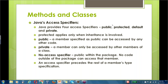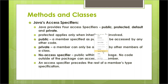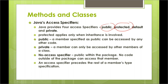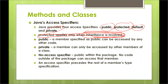Java provides four access specifiers: public, protected, default, and private. As mentioned, protected applies only when inheritance is involved. We will understand that when we discuss inheritance — that is when we will understand what exactly protected means.